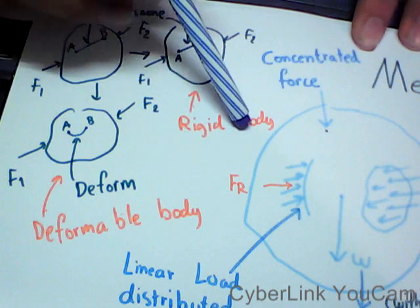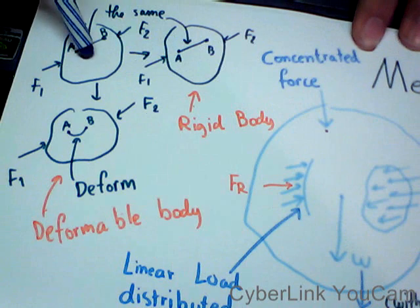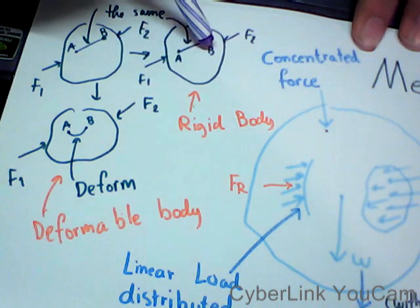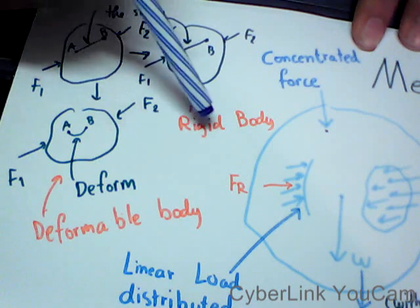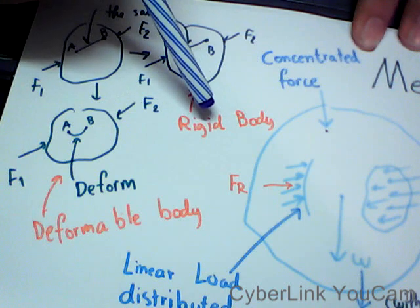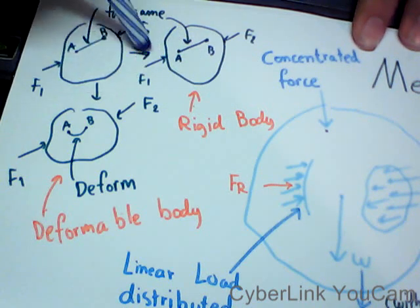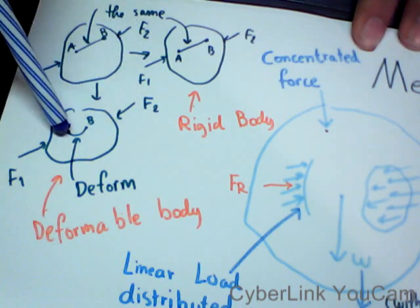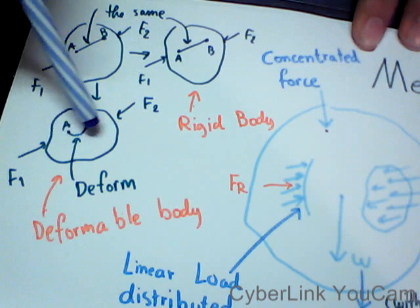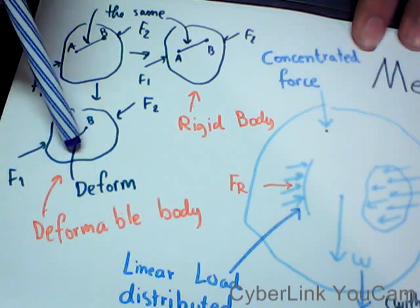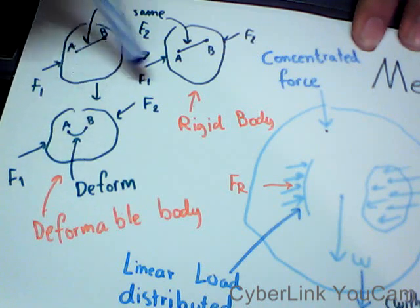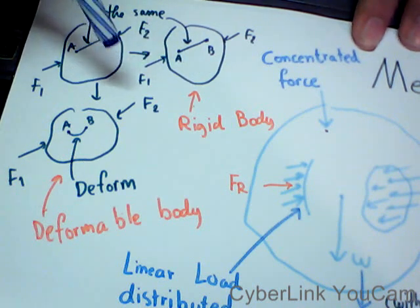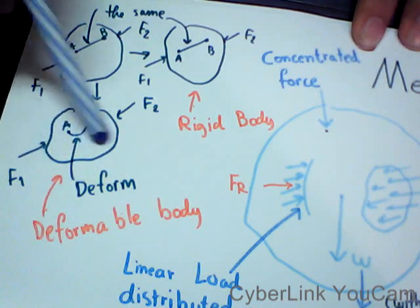A rigid body is a body where, when you apply some forces, the length between two parts remains the same. But if you apply some force and then the length changes or deforms, we call that body a deformable body. So for mechanics of materials, we study about the mechanics of deformable bodies.